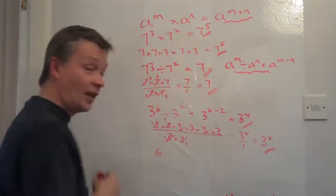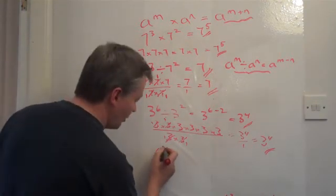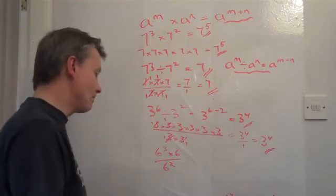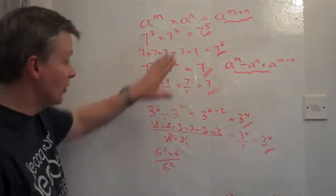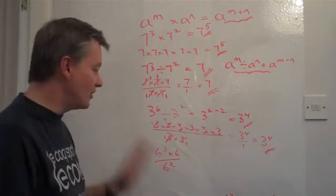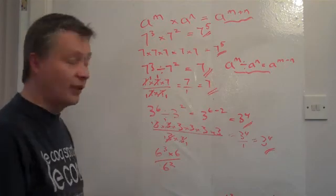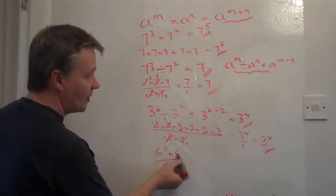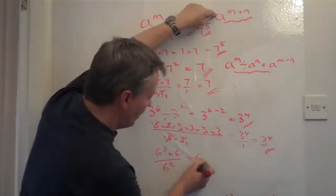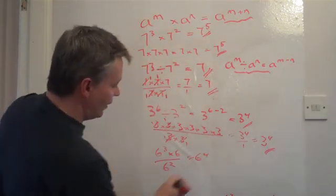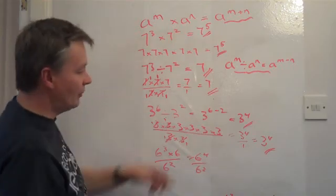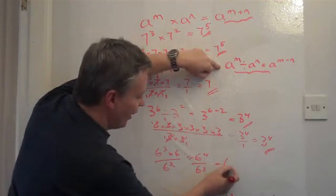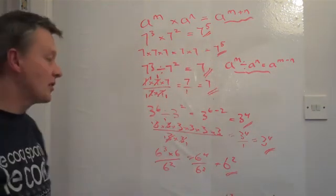The final example is an actual GCSE grade C question: 6 to the power of 3 times 6, divided by 6 to the power of 2. I'll use the laws. First, 6 cubed times 6 to the power of 1 gives 6 to the power of 4. Then dividing by 6 to the power of 2 gives 6 to the power of 2, or 6 squared.